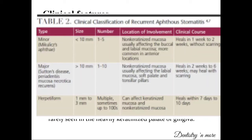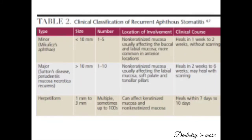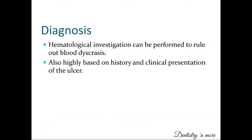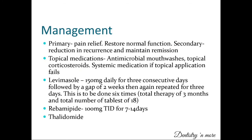Aphthous ulcers occur mostly in the non-keratinized oral mucosa — buccal as well as labial mucosa — and are rarely found in the heavily keratinized palate or gingiva, which is only seen in major aphthous ulcers. The diagnosis of recurrent aphthous stomatitis is mainly based on history and clinical presentation. To rule out any blood dyscrasia etiology, hematological investigations can also be undertaken. The primary goal of management is to relieve pain, followed by reduction in recurrence and maintenance of remission.